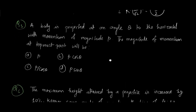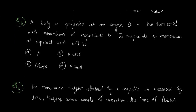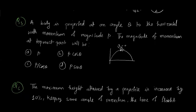Question 5: A body is projected at angle θ to the horizontal with momentum of magnitude p. What is the magnitude of momentum at the topmost point? At the topmost point, the vertical component of velocity is zero; only the horizontal component u·cosθ remains. Multiplying by mass m, the momentum at the topmost point is p·cosθ.